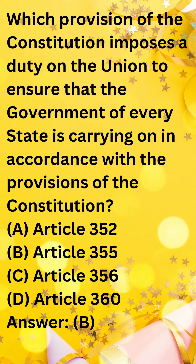Answer: B. The provision of the Constitution that imposes a duty on the Union to ensure that the government of every state is carrying on in accordance with the provisions of the Constitution is Article 355. Article 355 states: 'It shall be the duty of the Union to protect every state against external aggression and internal disturbance and to ensure that the government of every state is carried on in accordance with the provisions of this Constitution.'